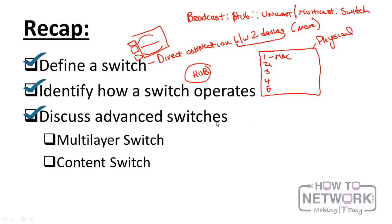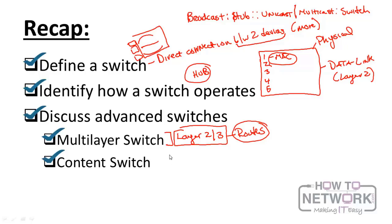We also looked at some advanced switches you need to know about. The first is a multi-layer switch which operates on layer two and three. Our usual switch, because it's only dealing with MAC addresses, is dealing with the data link layer, which on the OSI model is layer two. A multi-layer switch is also operating on layer three. It also routes, so it is not just a switch, it's also a router. A content switch is even going further up the OSI model and analyzes the content in a packet to determine where to send it.